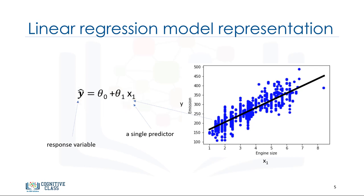Now the questions are, how would you draw a line through the points, and how do you determine which line fits best? Linear regression estimates the coefficients of the line. This means we must calculate theta 0 and theta 1 to find the best line to fit the data. This line would best estimate the emission of the unknown data points. Let's see how we can find this line, or to be more precise, how we can adjust the parameters to make the line the best fit for the data.